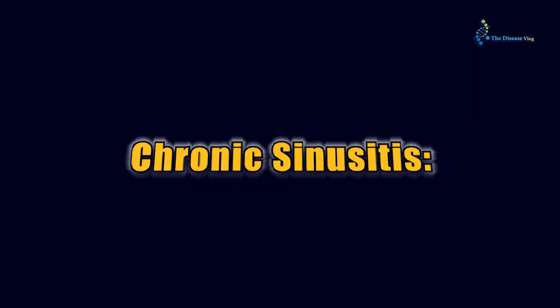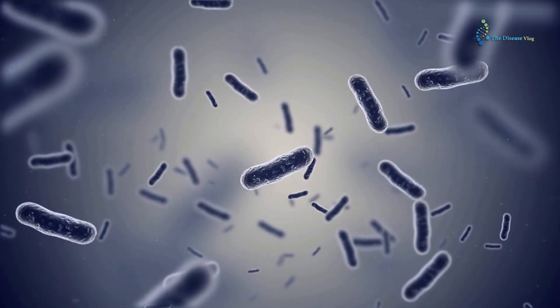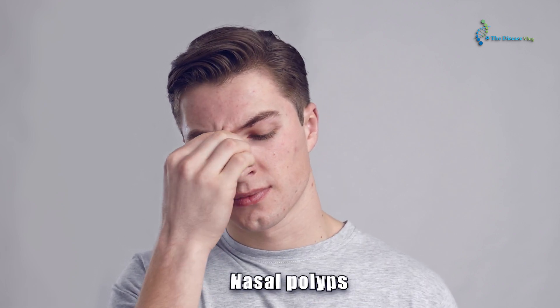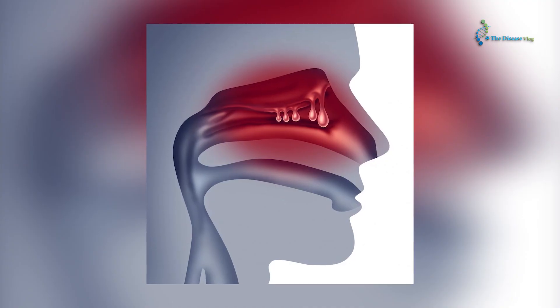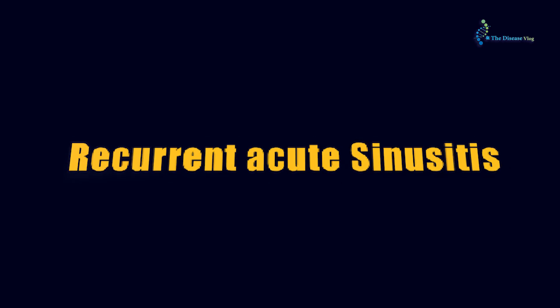Chronic sinusitis: the main cause is bacteria, and symptoms last for at least twelve weeks. In this type, infection growth in the sinuses is called nasal polyps, which could lead to swelling of the lining of the sinuses. Recurrent acute sinusitis occurs when symptoms appear four or more times a year. Each time, the symptoms remain less than two weeks.